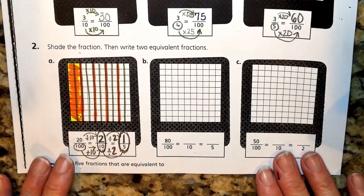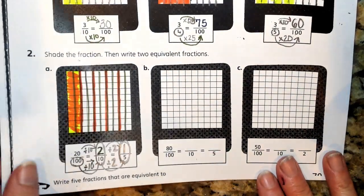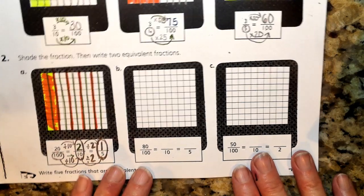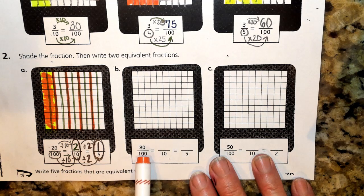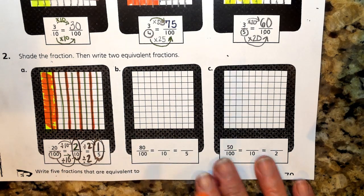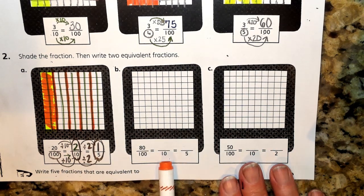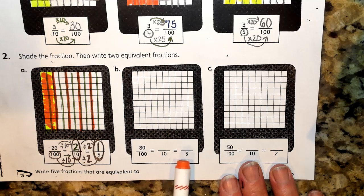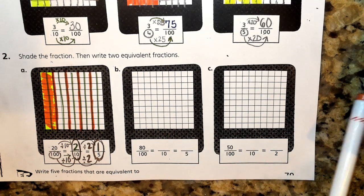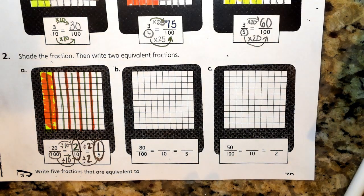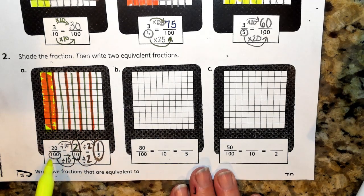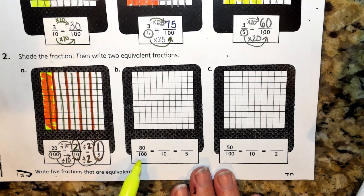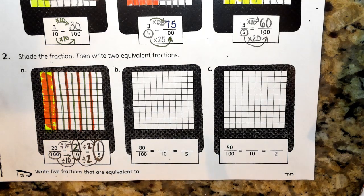Looking at answer number B. So again, I'm looking at my fraction 80 hundredths. I'm glancing across, noticing that my denominator is getting smaller. And so I want to find some equivalents in lower terms. Remember, we're going from high terms to lower terms, just renaming that fraction.